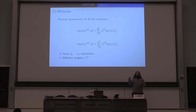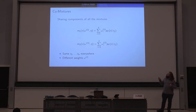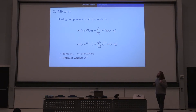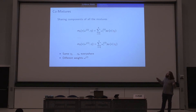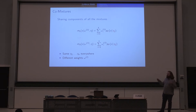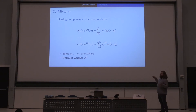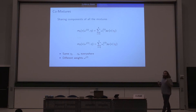I call these co-mixtures or co-mix. We impose one more constraint: the components of all the mixtures are shared across all sets of points. So we have a matrix of weights for all mixtures we learn jointly, but the parameters of the distributions are the same across all mixtures — different weights, but shared component parameters.